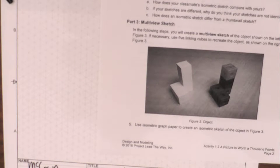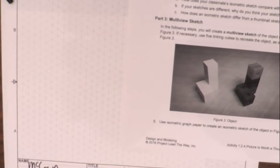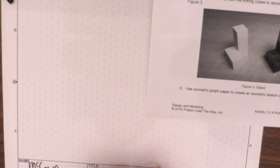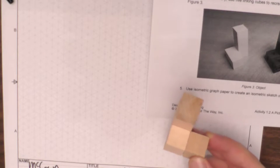The first part that we need to do is an isometric. Then we can move on to the front, top, and right. So that's what we're going to start with using this image. We're going to move that off to the side so that we have it to reference, and we'll also use our blocks right here to look at it.